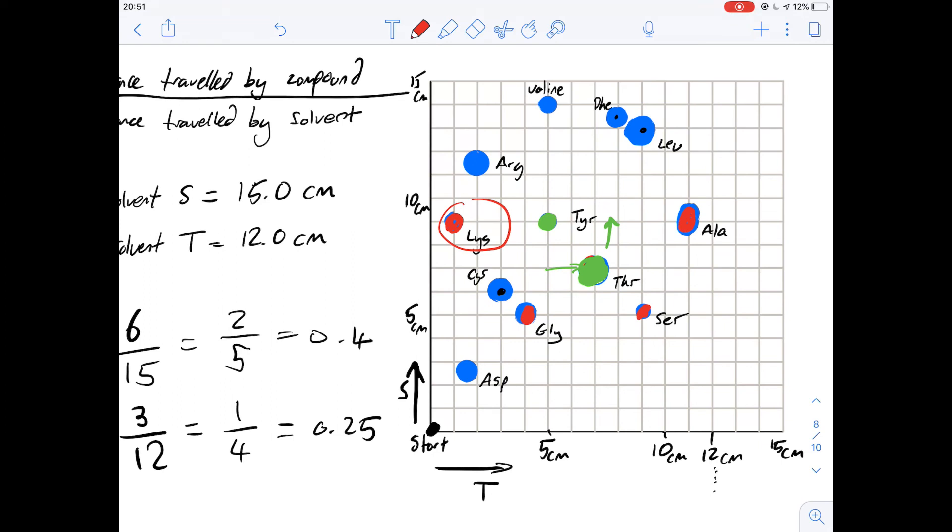So number one it says lysine has greater affinity for solvent S than for the paper and we can see that's true because it's moved more than halfway up the scale. Lysine has a greater affinity for solvent T than for the paper. Well that's not very true because it only went one centimeter in that direction whereas T went 12 centimeters so its R value would be less than 0.5 and so it has a greater affinity for the paper than for solvent T. So number two is false. And the third one says lysine has a greater affinity for solvent S than for solvent T. You could sit and work out the R1 values but I think it's fairly obvious that three is definitely true. So one and three are true but two isn't so that means that the answer for 26 is going to be D.